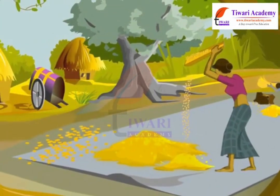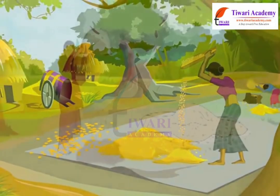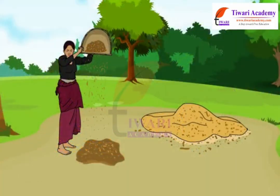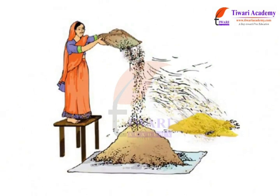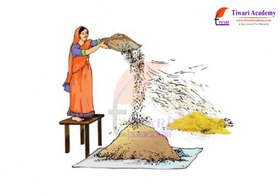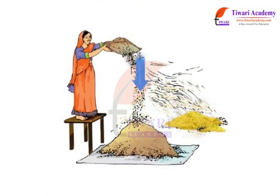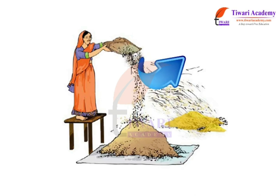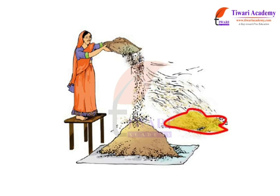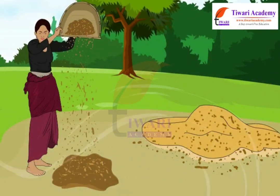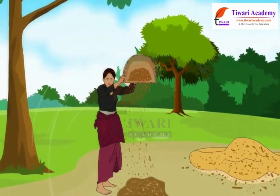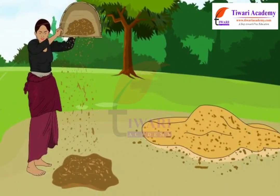This method is generally used by farmers to separate grain from husk after threshing. The farmers allow the mixture of grain and the husk to fall from a height. The grains, which are heavier, fall vertically down on the ground. The husk, which is lighter, is carried away by the wind and forms a separate heap at a short distance from the heap of grains. Winnowing is often done on a breezy day so that the chaff easily gets separated from the grain.